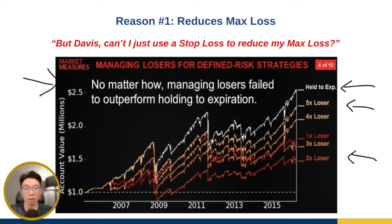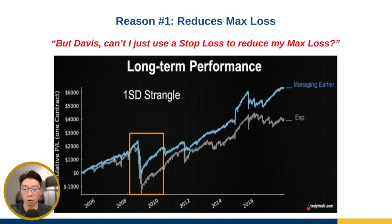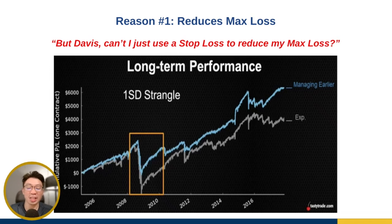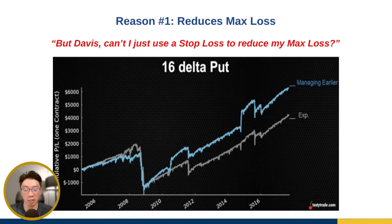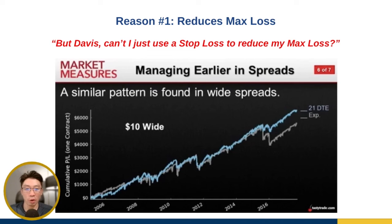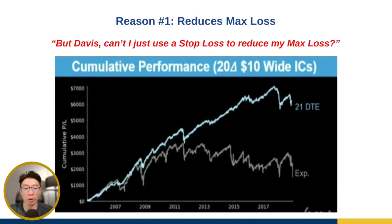What about the performance of 21 DTE? The Tasty Trade team compared exiting at 21 DTE versus holding to expiration across all the different strategies they tested, and exiting at 21 DTE actually gives you a much better performance. This holds for the strangle, the short put, the put spread, and the iron condor — all of them just do better if you exit at 21 DTE instead of holding to expiration.